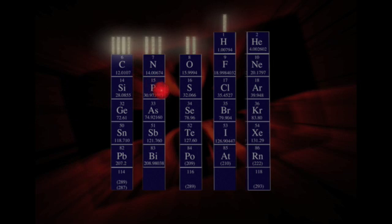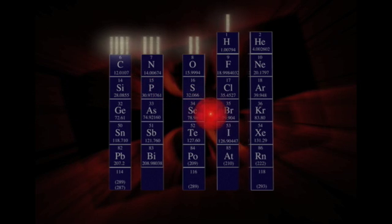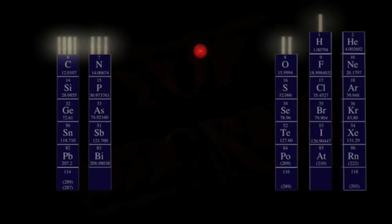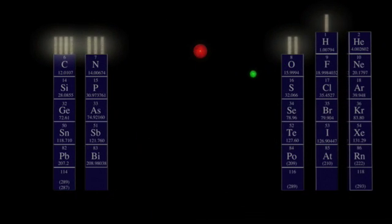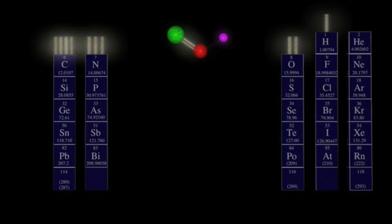Now this carbon atom wants to make four bonds, and it is pretty versatile about how it does this. Let's give it a double bond with oxygen, satisfying oxygen's desire for two bonds. And let's give it one hydrogen. That's a total of three bonds for carbon. It still wants another. So let's give it another carbon for its fourth bond.